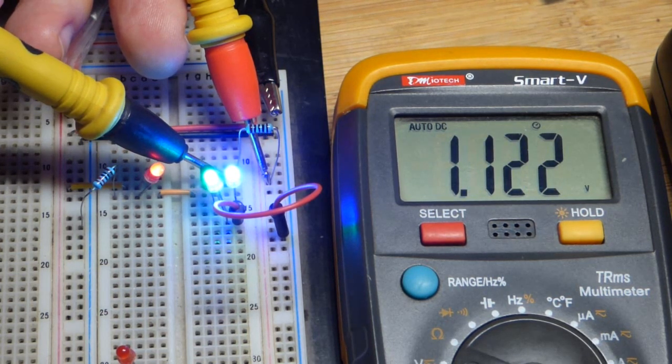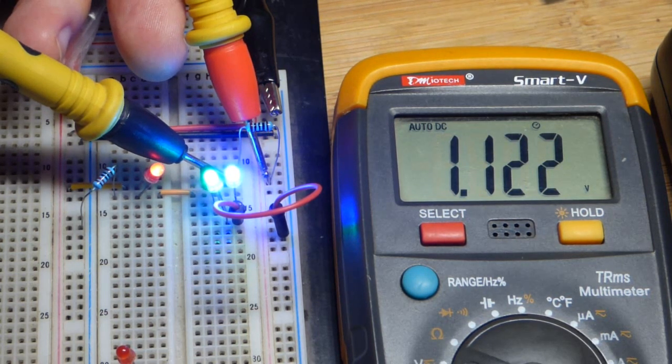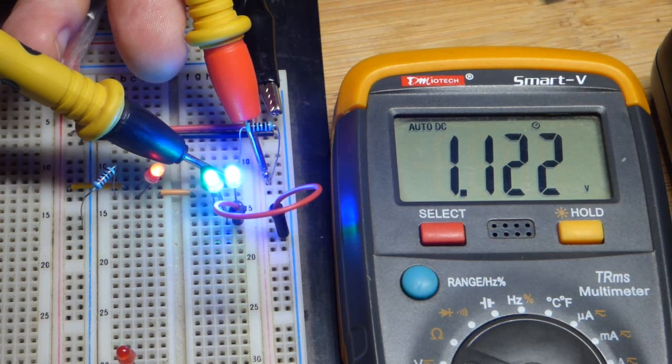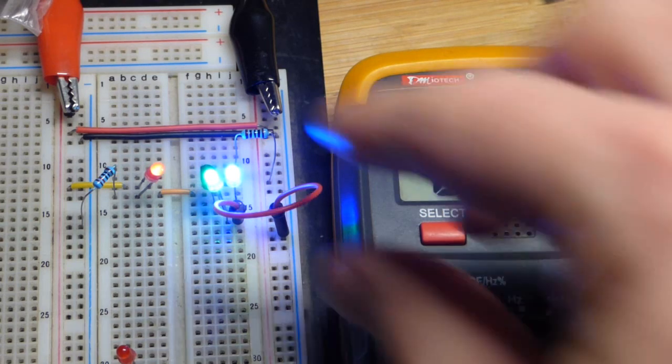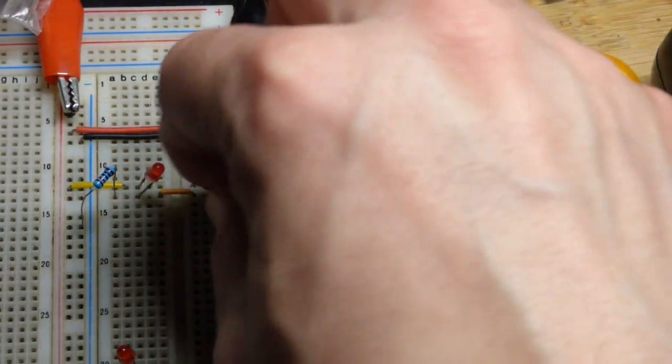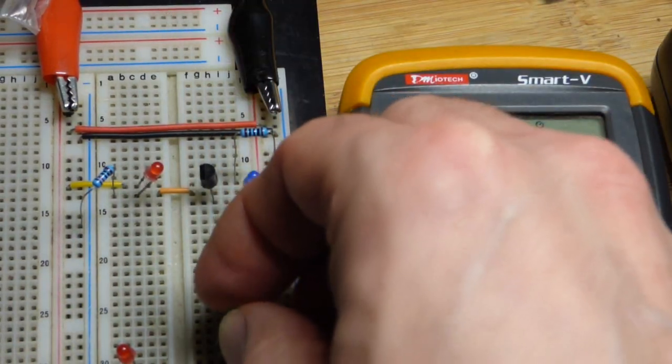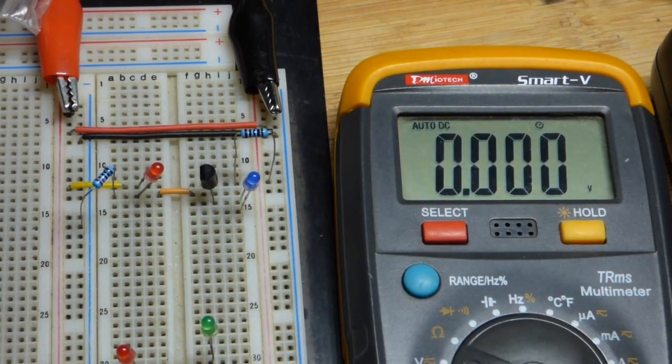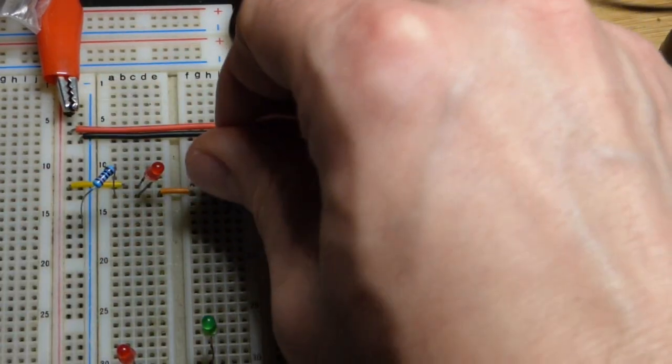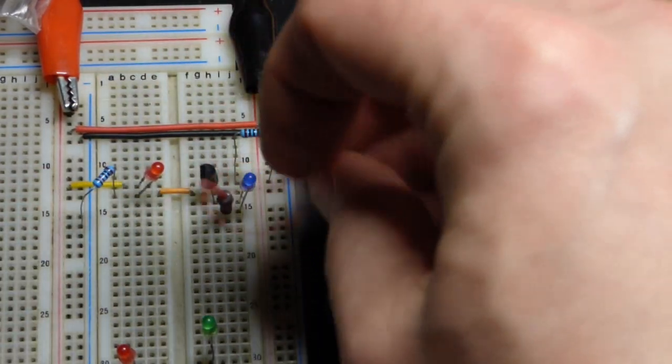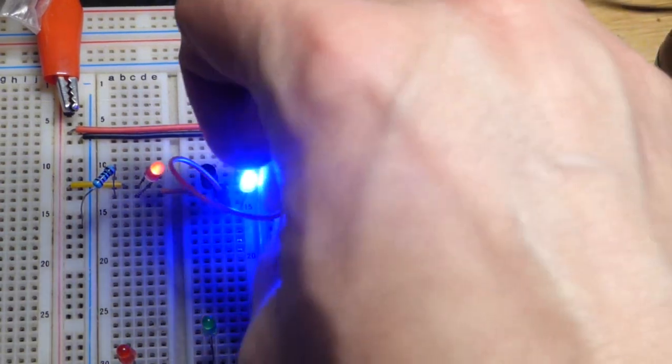So, should be about 1 volt approximately across the resistor. There you can see 1.12 right there. And now we will pluck that jumper. Get rid of the green LED. And it's really hard for me to see right now. I'm dropping the supply voltage to 5 volts. And now we'll connect the jumper to the blue LED. And there we go.